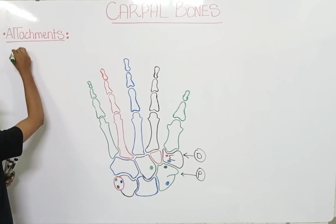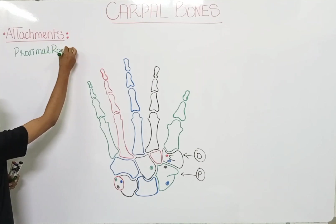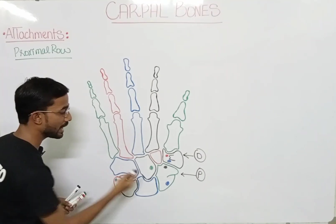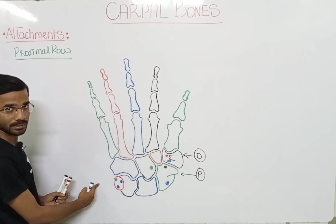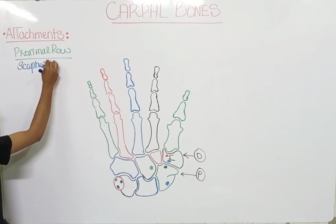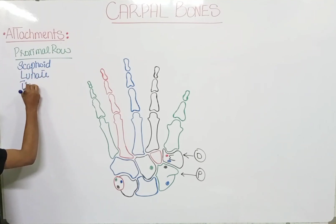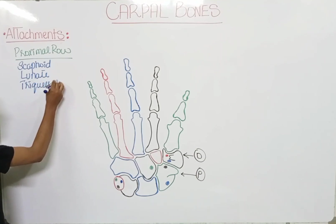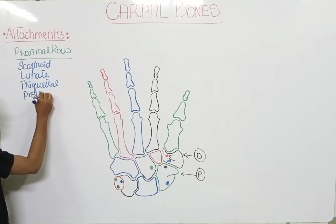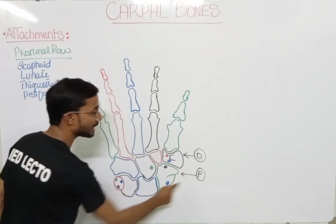In the proximal row you will see four bones, and we will see them from the lateral to the medial side. The first one is the scaphoid, the second one is the lunate, the third one is the triquetral, and the fourth one will be the pisiform. So these are basically the four bones that lie in the proximal row.